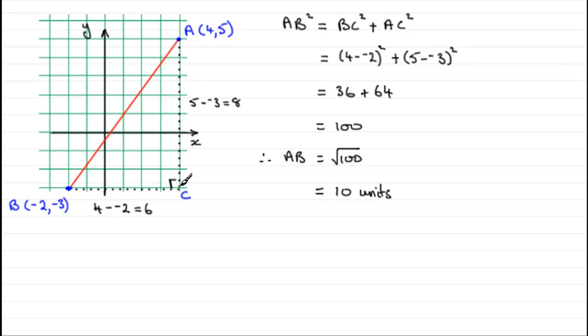OK, you can't have a length that's minus 6, but by Pythagoras' theorem, you're going to end up squaring it anyway. And minus 6 squared still gives you 36.